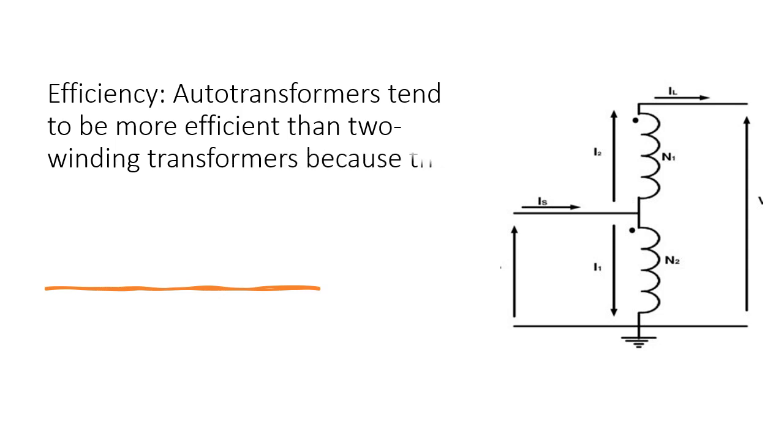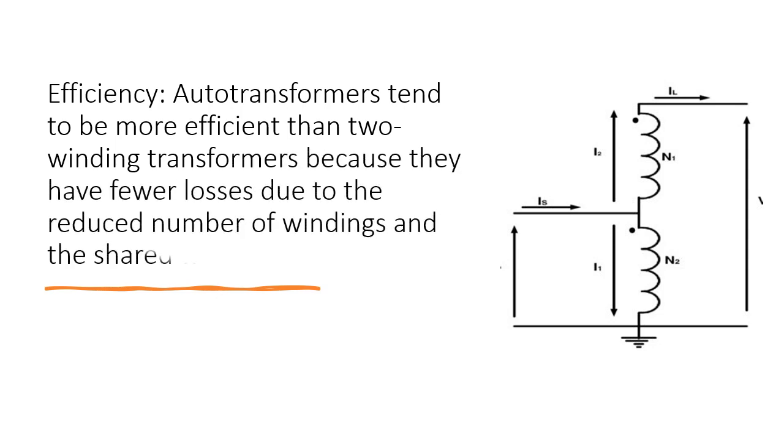Efficiency: Autotransformers tend to be more efficient than two-winding transformers because they have fewer losses due to the reduced number of windings and the shared winding section.